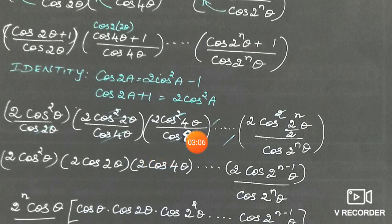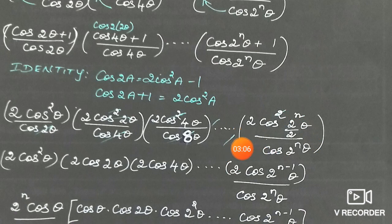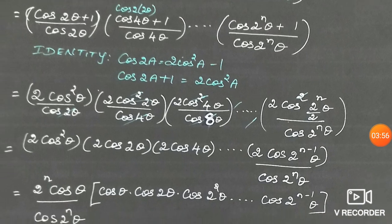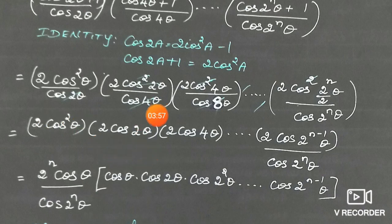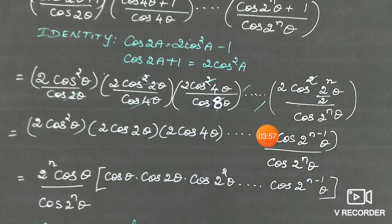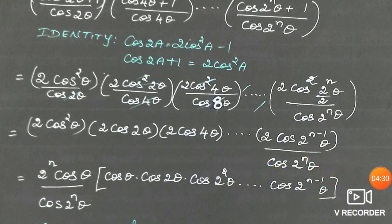You can cancel the denominator of each product with the squared cosine in the numerator of the next product. The first product denominator cos2θ cancels with one factor of cos2θ from the second product's numerator cos²2θ. Similarly, cos4θ in the second product's denominator cancels with one factor from the third product's numerator. Continuing this pattern, remaining terms after all cancellations give 2cos²θ in the denominator becomes 2, already one cos cancelled, leaving remaining cosines.